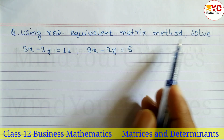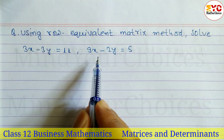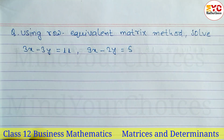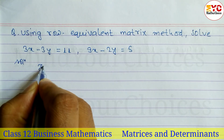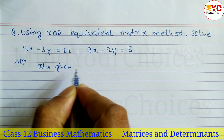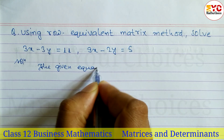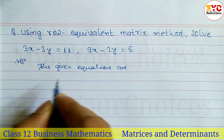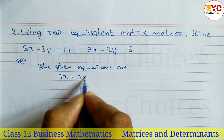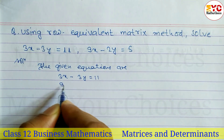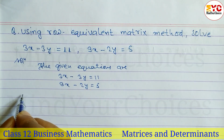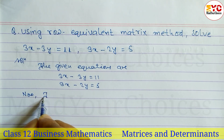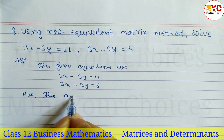Using the row equivalent matrix method, we have to solve the given equations. We have two equations, and we have to find the value of x and y. The given equations are: 3x minus 3y is equal to 11, and the next equation is 9x minus 2y is equal to 5. We have to write these in the form of an augmented matrix.